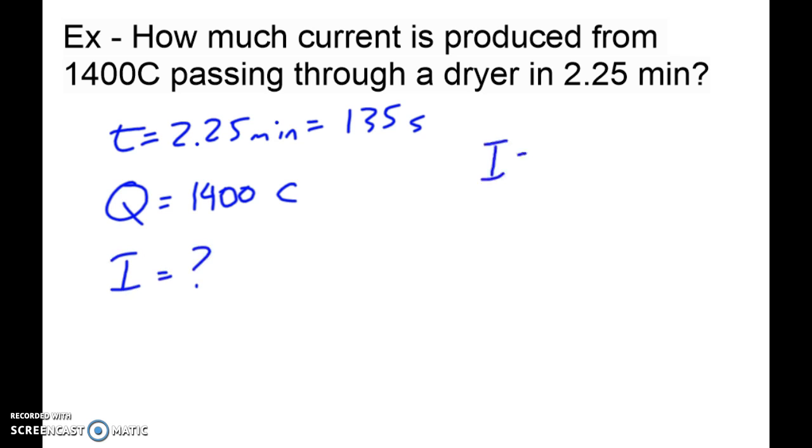So if we plug in i equals q over t and we plug in our numbers, we find that the current in this case is 10.37 amps.